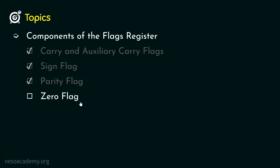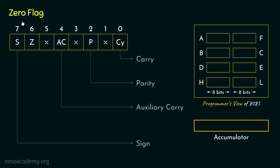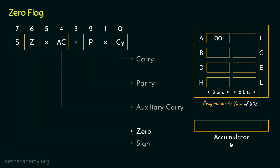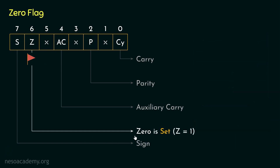Let's now learn about the zero flag. Within the flags register, bit position number 6 is designated as Z, reserved for the zero flag. When will it be set? We depend on the value inside the accumulator. If the accumulator contains all zeros — 00 in hexadecimal, stored as all 0s in binary — then and only then the zero flag (Z flag) is going to be raised. So the zero flag is set, or Z becomes 1, if the accumulator contains all zeros.